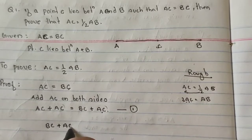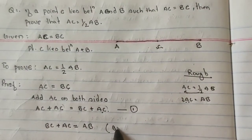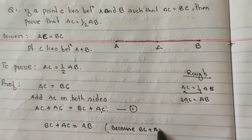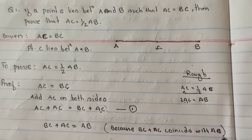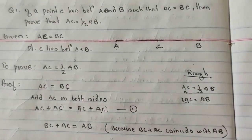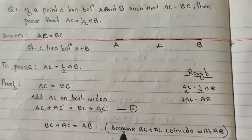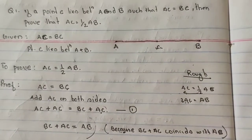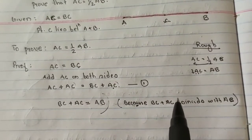Now you can see that BC plus AC is equal to AB — why? Because my AC plus BC coincides with AB, which is our axiom. So you need to remember this axiom so that you can write it. If you write like this you will get full marks. If you only write up to here and don't write the reason why, your marks will get cut.